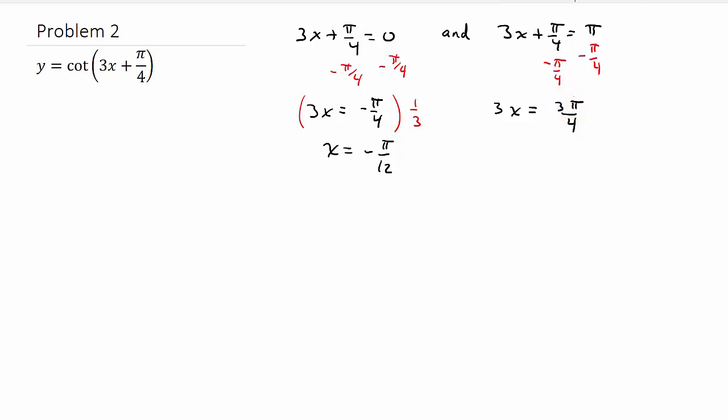Okay, and then we'll multiply both sides by 1 third to get rid of this 3. So that's going to be x equals π over 4.